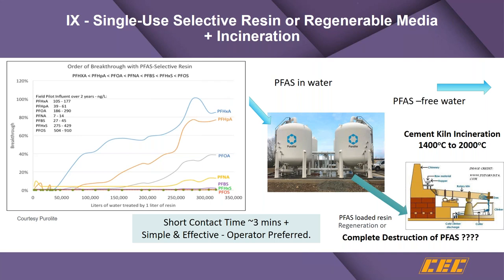Ion exchange is another technology. These have a shorter contact time, meaning smaller vessels. The media itself is more expensive than granular activated carbon. We see that the carboxylates — the ones that end in A — are much more difficult to remove than the sulfonates that end in S. An ion exchange system may achieve several hundred thousand bed volumes before it has to be regenerated.